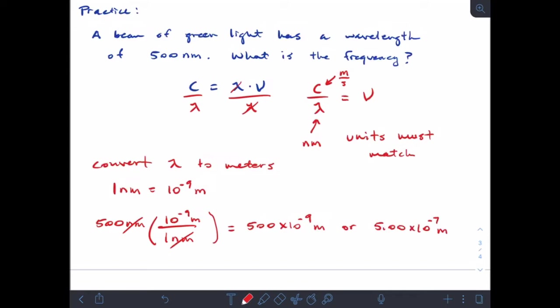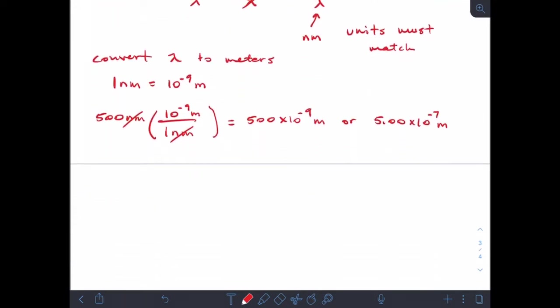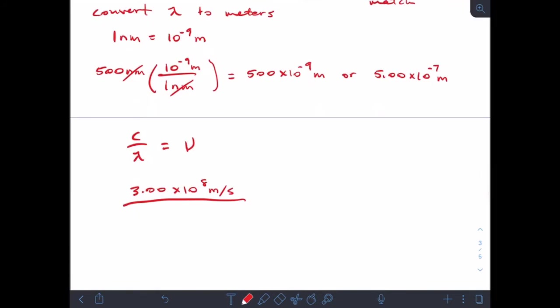Now that I have everything in the right units, I'm going to plug these things into that equation. Remember I had c over λ equals the frequency ν. c is a constant, 3.00 times 10 to the 8 meters per second, and we're going to divide that by λ which we calculated as 5.00 times 10 to the minus 7 meters. Our meters will cancel, and that means I'm left with seconds on the bottom.